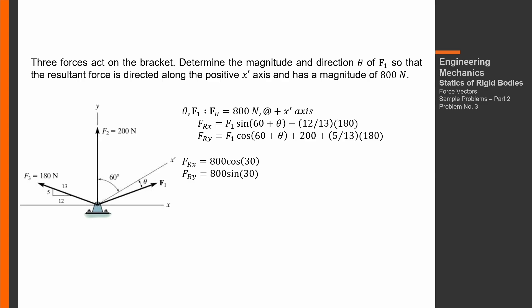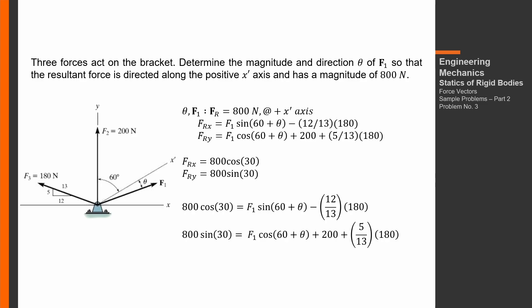The given FRx, which is the summation of x-components, equals 800 cosine 30, and the summation of y-components equals 800 sine 30. Now we substitute these into the equations.